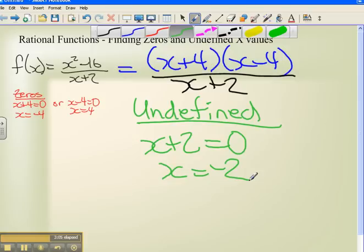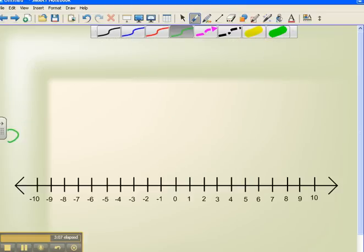So to quickly recap that, we're going to have zeros at minus 4 and plus 4. So we're going to have a zero there. Plus, we're going to be undefined wherever x equals negative 2. We're not going to actually have any x values.